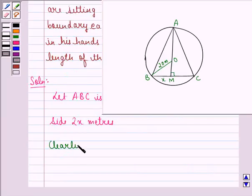Clearly, we can say that BM, that is this, is equal to BC by 2. BC is 2x, so 2x by 2 is equal to x meters. Now, we say that BM is BC by 2 because we know that if we draw a perpendicular from the center of the circle to a chord, then it bisects the chord, so we have BM is equal to x meters.